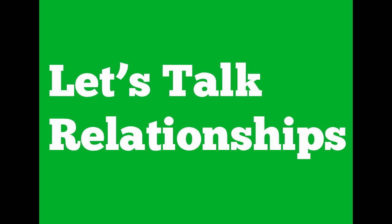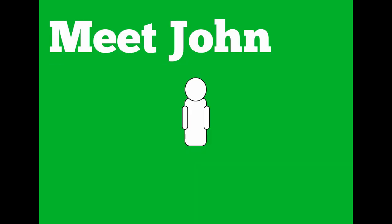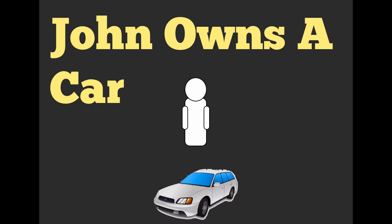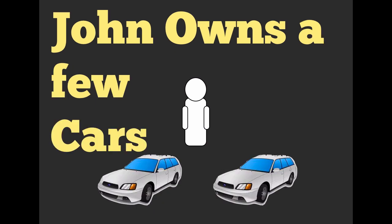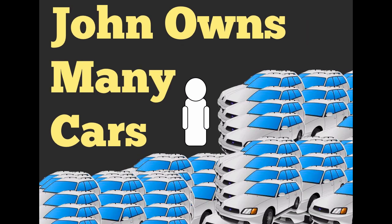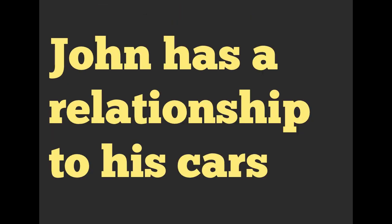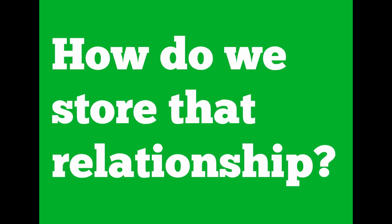So let's talk about relationships. I want you to meet John. John owns a car — as a matter of fact, John owns a few cars, and he might own many, many cars. You could say that John has a relationship to his cars. We want to represent this some way. We would say that John has many cars and a car belongs to John. So how do we store that relationship? How can we actually represent that in our database, our data store?